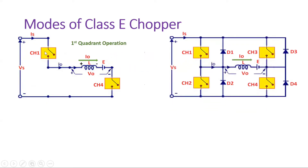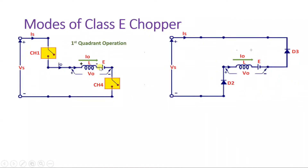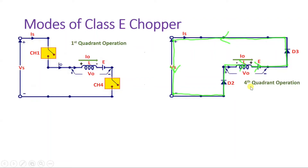When Switch 1 and Switch 4 are turned off, the inductor reverses its polarity and discharges through a new loop. Current flows from the inductor through E, through diode D3, and through D2. Diodes D2 and D3 come into forward bias. The current direction remains positive, but the VS-plus terminal now appears on the opposite side, making output voltage negative. So output current is positive and output voltage is negative — this mode functions in the fourth quadrant.